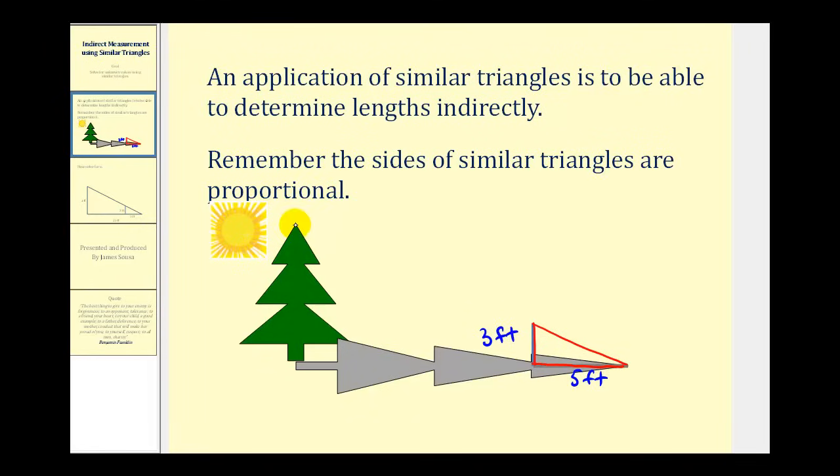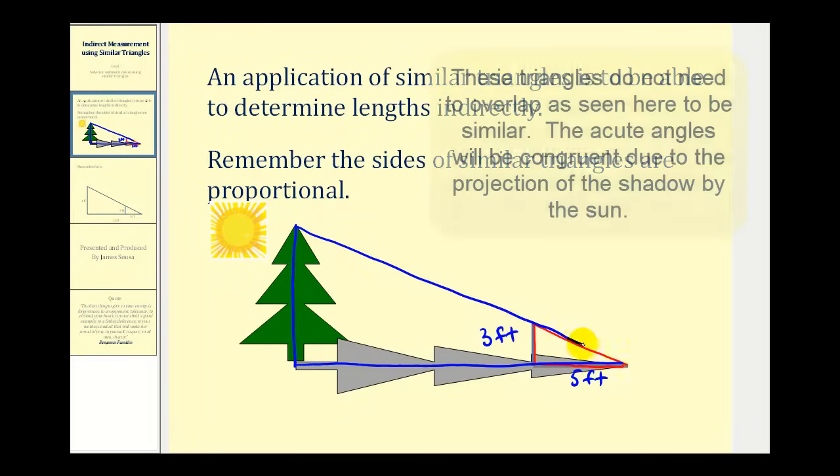There's a triangle formed by the tree and the shadow of the tree. And this large blue triangle would be similar to the small red triangle by angle, angle, angle similarity.